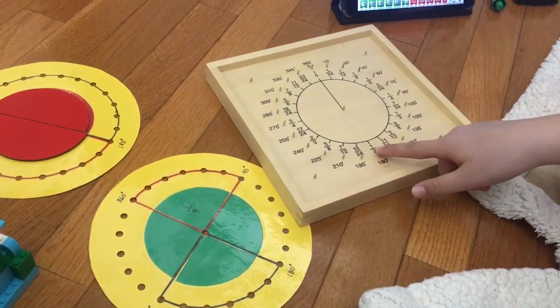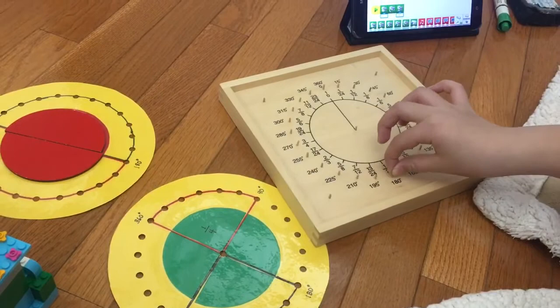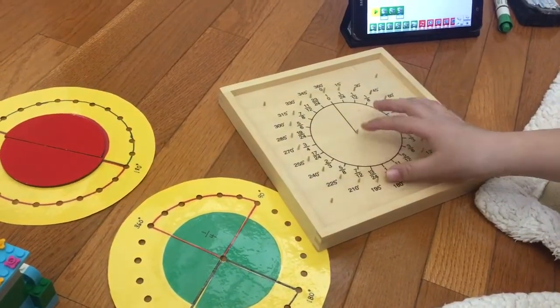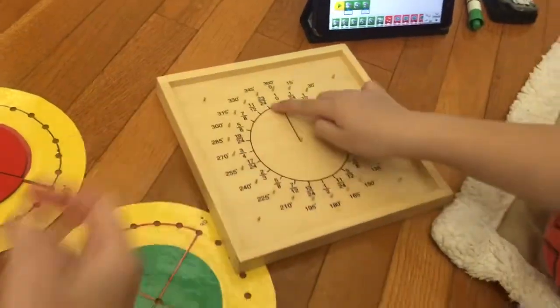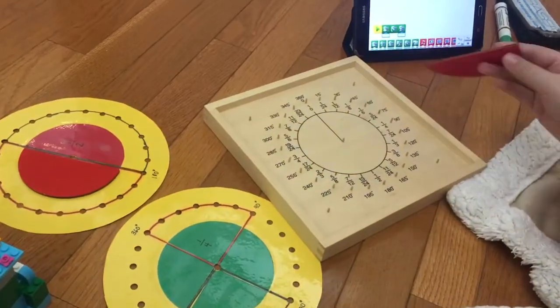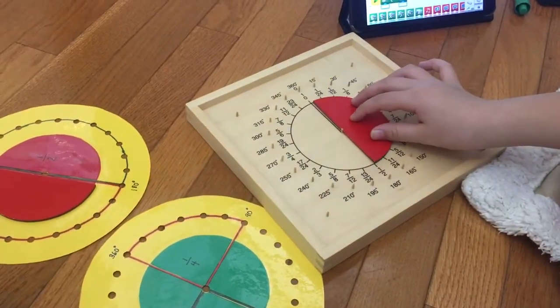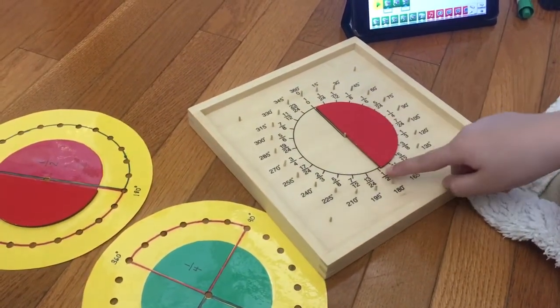180 is a half. It is a half. So 180 plus 180 is 360. That's right. Very good. And so I would take a half of this and see how it lines up to there.